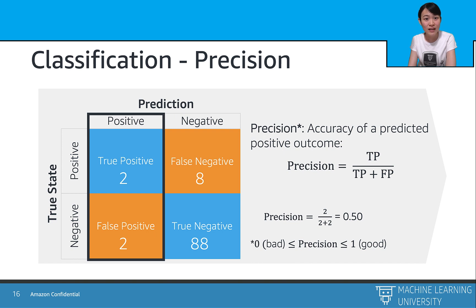And that's why we need another matrix called precision, which is the accuracy of all the positive predictions. That is TP divided by sum of TP plus FP. In our example, the precision is 50%, which is a bit low. Like the accuracy matrix, precision is a percentage number between 0 and 1, and the higher, the better.